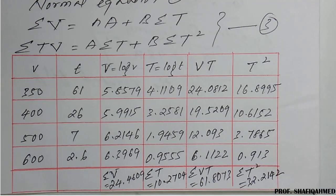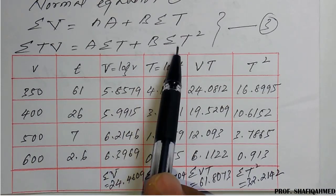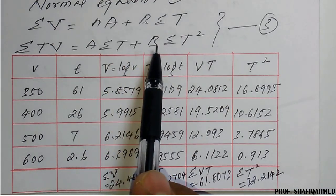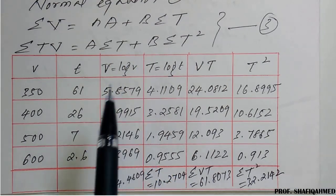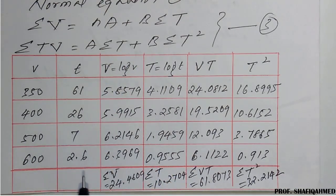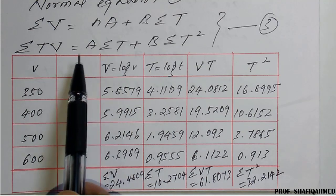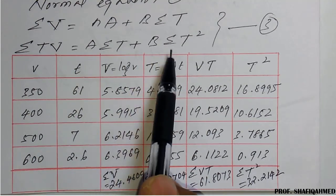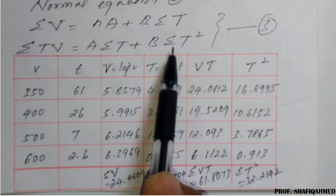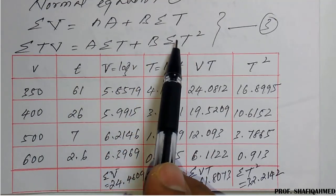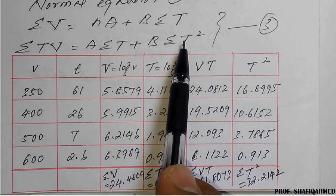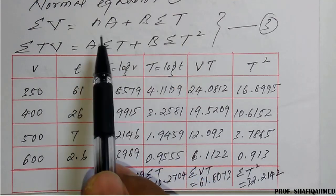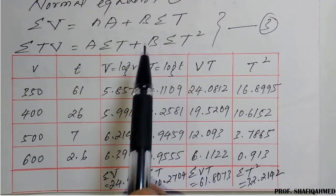The summations are: ΣV = 24.4609, ΣT = 10.2704, ΣVT = 61.8073, and ΣT² = 32.2142. These summations are now applied to the normal equations (equation 3) to find capital A and B.